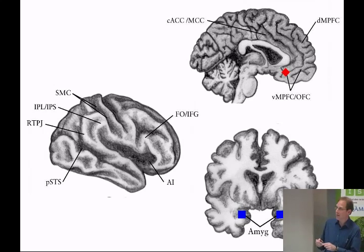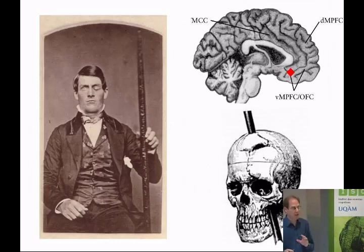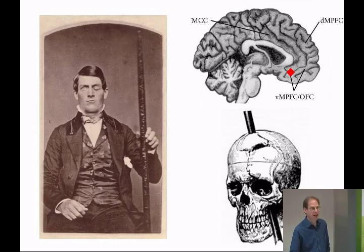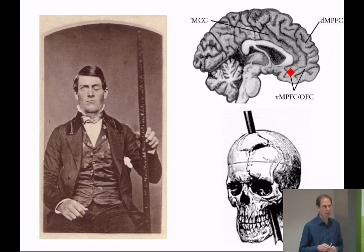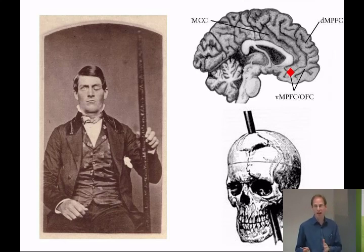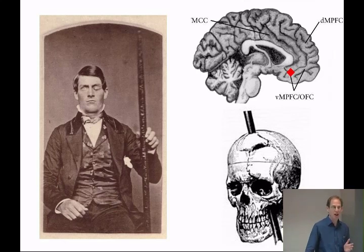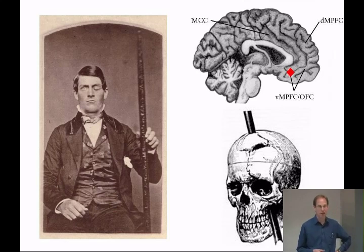We might start with the ventromedial prefrontal cortex. We know it's involved in empathy from the famous neurological case of Phineas Gage, who back in the 1840s suffered damage to this region when dynamite blasted a metal rod up behind his eye and through his brain. Before the accident he was described as a very sensitive, courteous, considerate individual; after the accident he was described as very rude and no longer able to judge what was socially appropriate. The implication is that he lost his cognitive empathy.